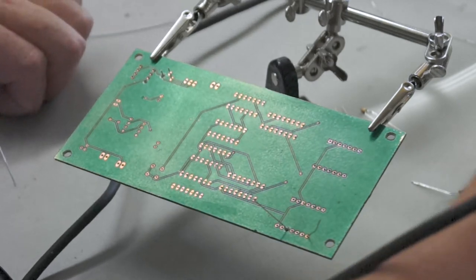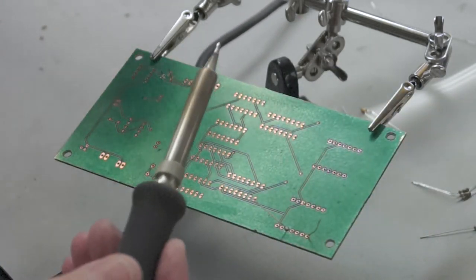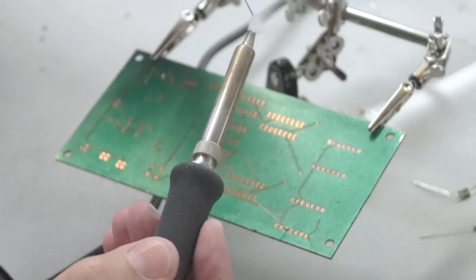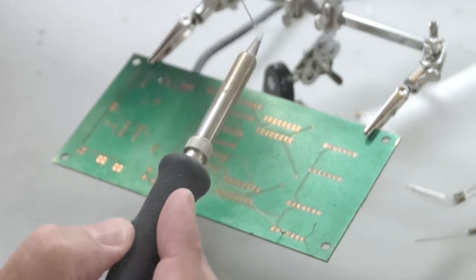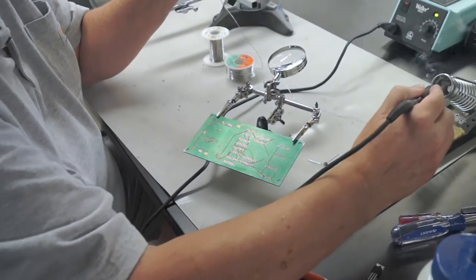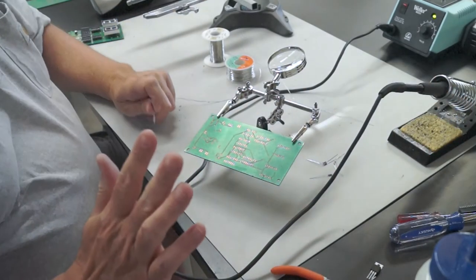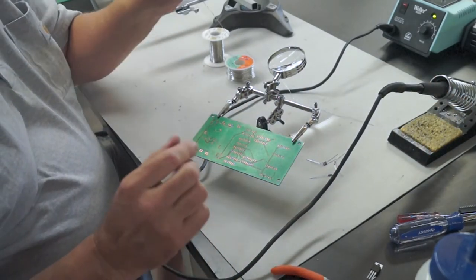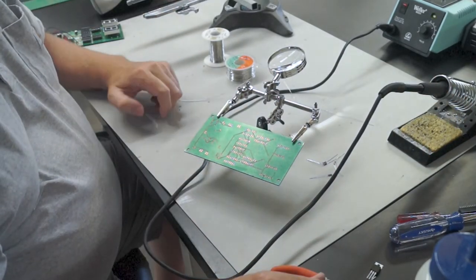Once you get that done, if you're not going to be soldering for a little while, go ahead and add some more solder back onto your iron tip so that it keeps your tip nice and clean when you're ready to go use it again. Always put solder onto that tip when you're going to leave it set.